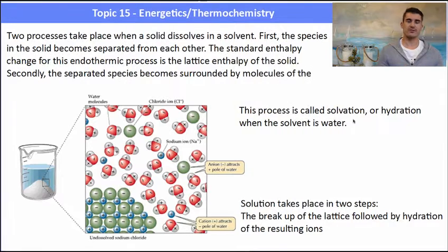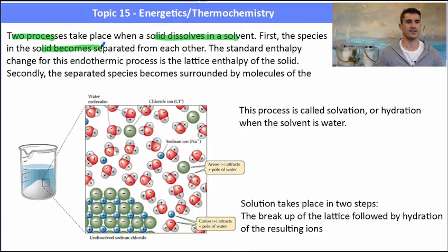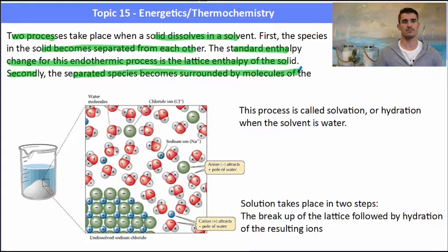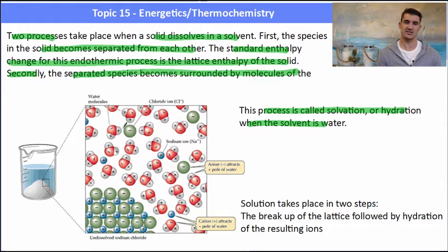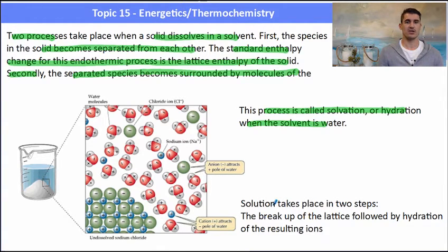When a solid dissolves, there are two important processes that take place. First, the species in the solid become separated from each other — we need to break the ionic bonds between the positive and negative ions. The standard enthalpy change for this endothermic process is the lattice enthalpy of the solid. Second, the separated species then become surrounded by molecules of the solvent, or become hydrated if we're using water. So the two important steps are: breaking apart the lattice (lattice enthalpy), and then water forming ion-dipole interactions with the ionic compounds (hydration of the ions).